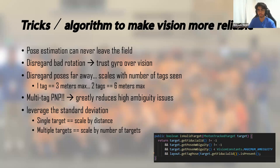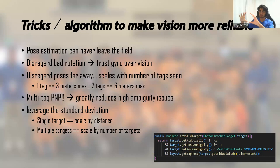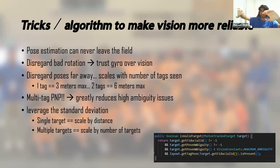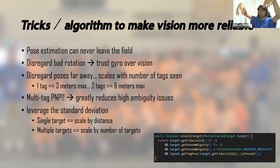A really big feature we have is multi-tag — this is probably the single best thing you can do to increase your vision estimation reliability. Basically it removes or greatly reduces the issue of high ambiguity. When you take each tag individually, you can get ambiguity where you're not sure exactly which way it's facing because of lighting or because you're so far away you don't see as many pixels. The way multi-tag works is you give it a field layout — you tell it tag one is here, tag two is here, tag three is here. When it sees multiple tags and one has really high ambiguity, it can do math to figure out what's not possible given the field layout, and fix that estimation. It basically reduces the issue of ambiguity when you see multiple targets.